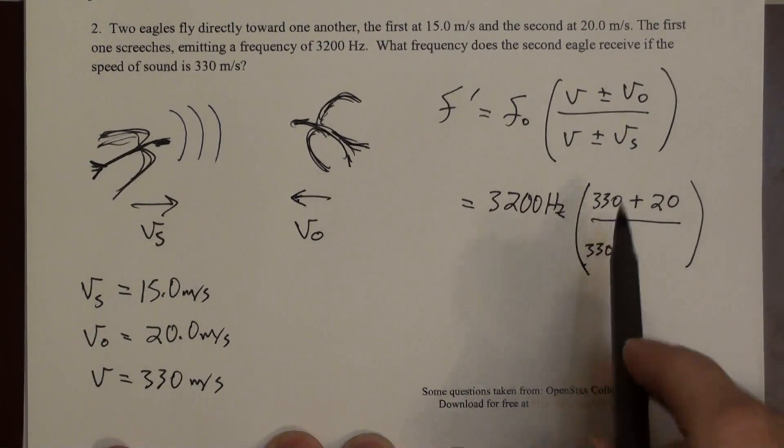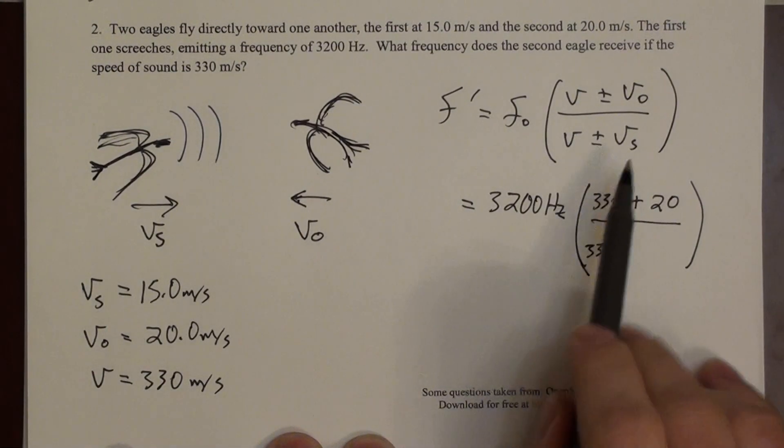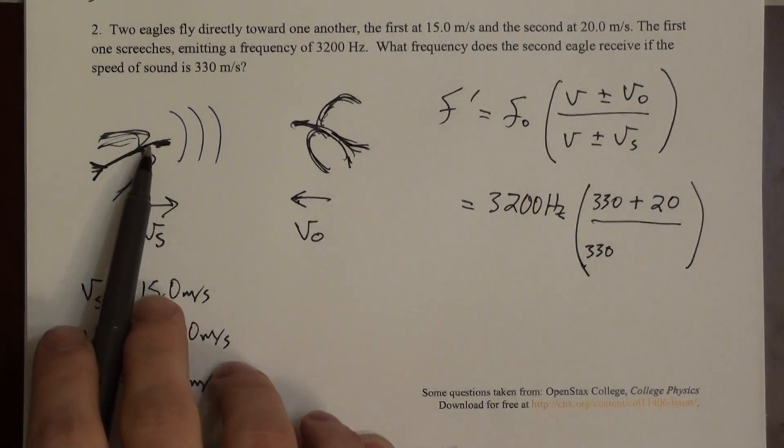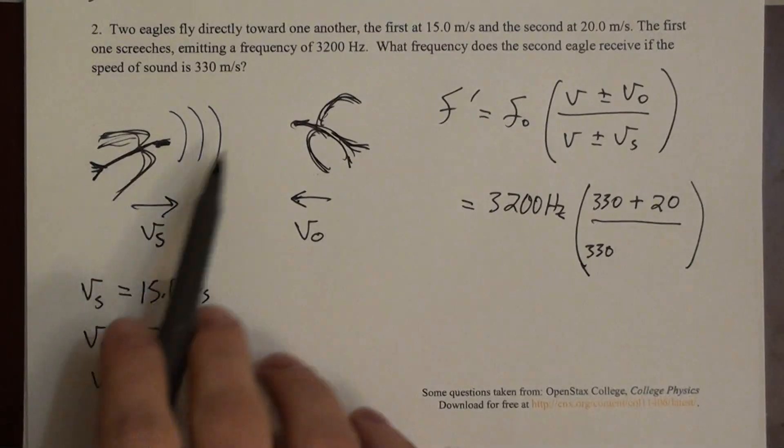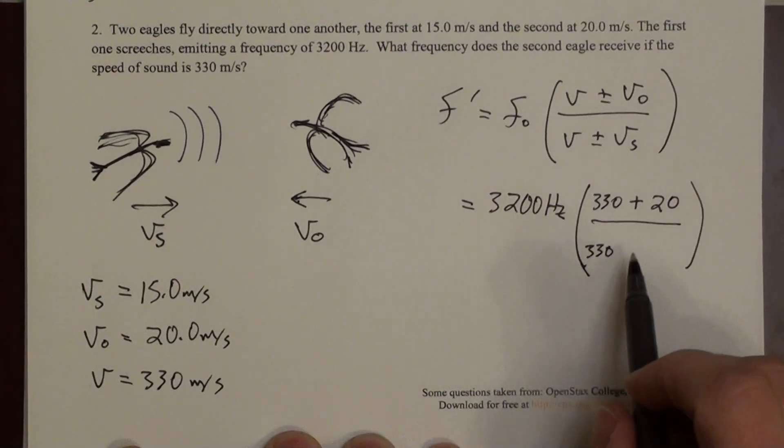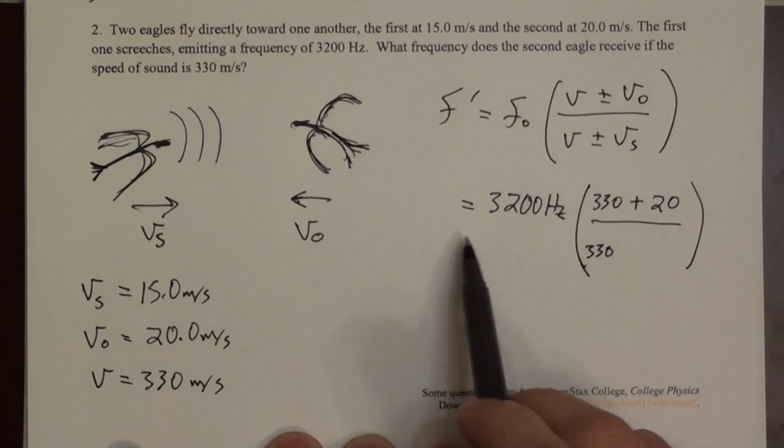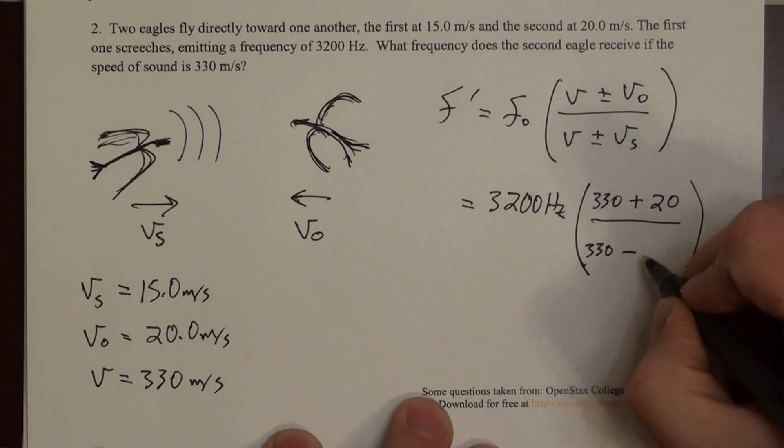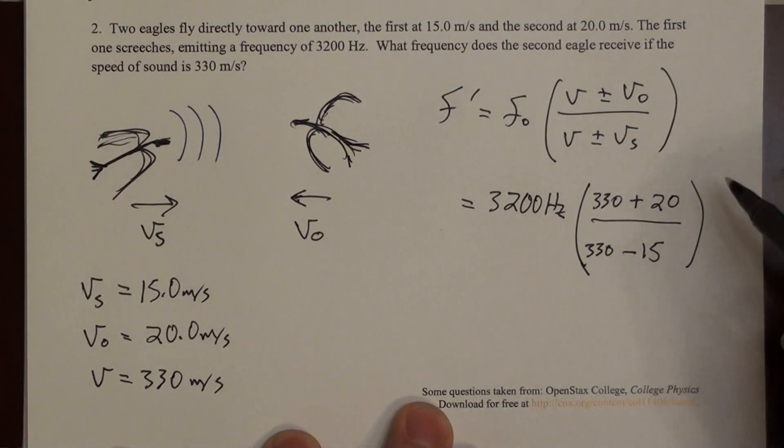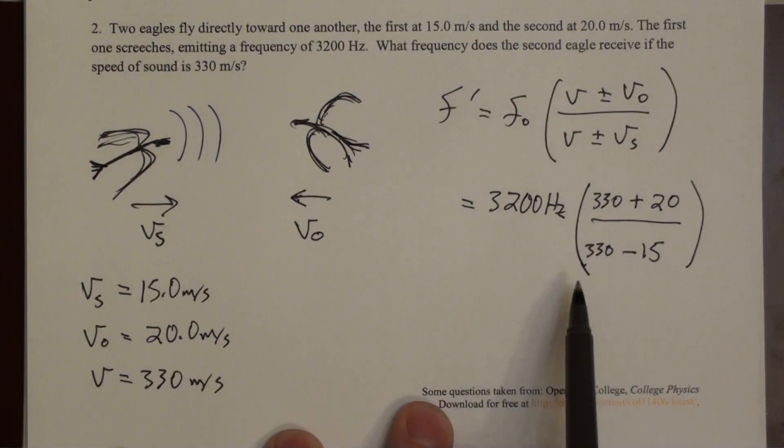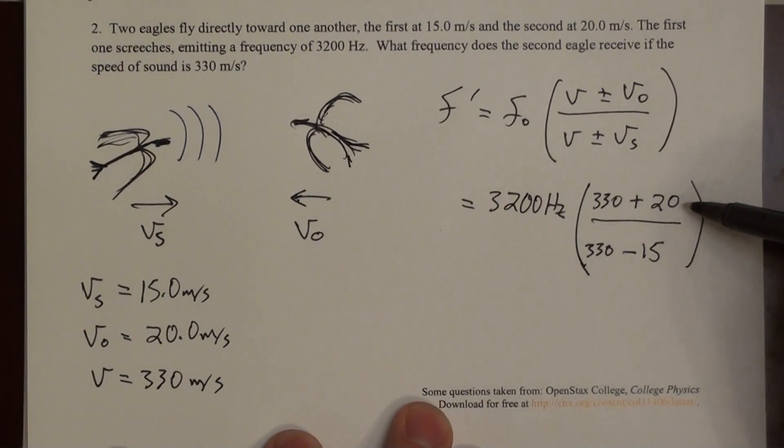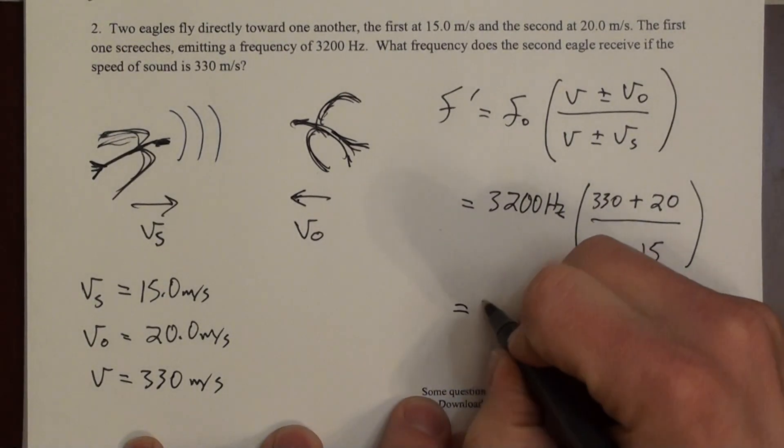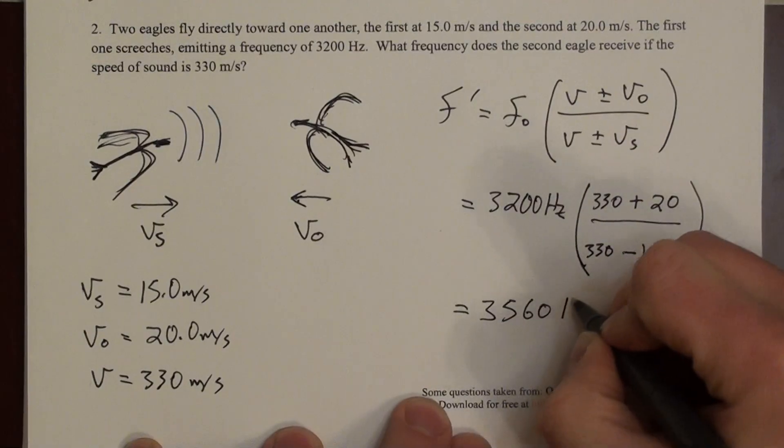And then in the denominator, we have the source eagle. The source eagle is flying toward the observer. So that again is going to increase the frequency with which these wave fronts reach this observer. So I need to increase the observed frequency by changing the denominator. And to do that, I actually subtract, because the effects here, I need the net effect to be the same by each of these. But in the numerator, I add. And in the denominator, I subtract. So if you do this math, you end up with 3560 hertz. That's the frequency observed by the second eagle.